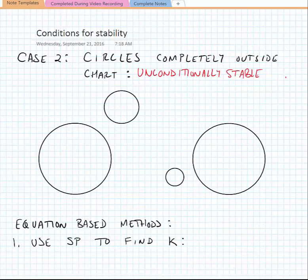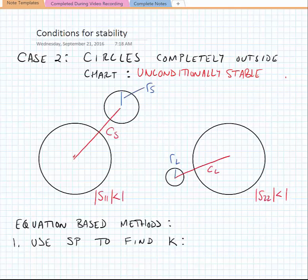Let's look at our unconditional stability case. Here it's explicitly clear that S11 and S22 are both less than one, and the C_S, C_L, R_S, and R_L result in circles that are completely outside of the Smith chart.